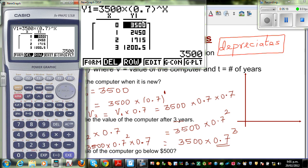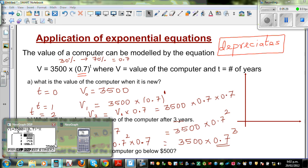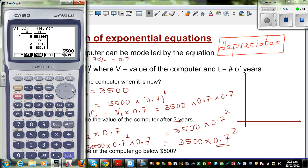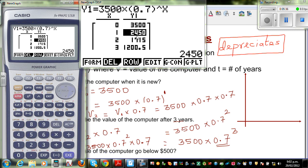So let me explain this table. So it tells me when it is 0 years, when t is 0, or x is 0, the value is 3,500. When it is one year, it is 2,450. I'll explain that. You can do this on a calculator. 3,500 times 0.7 would give you this number.